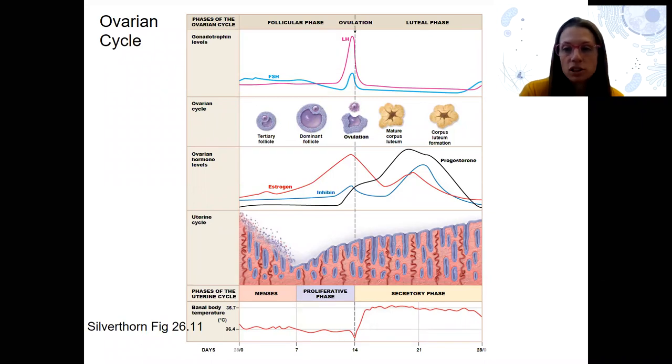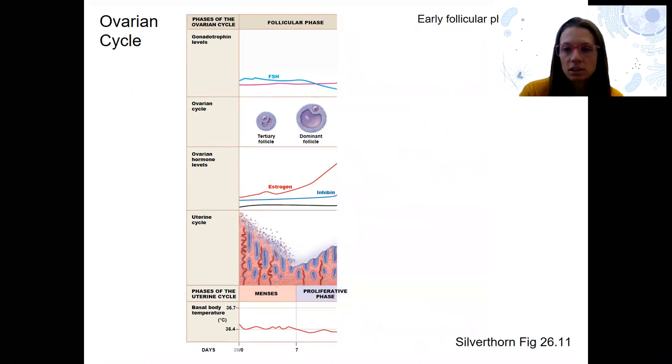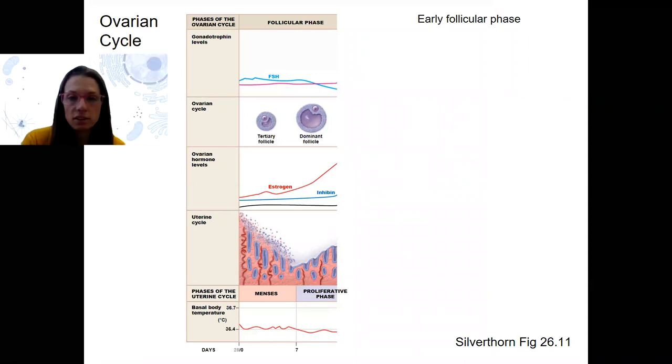We've seen this figure before. You know about these changes throughout the 28 days in humans of the ovarian cycle. We're going to go through each one of these phases, follicular, ovulation, and luteal phase, and look at the HPG axis function at each of these phases.